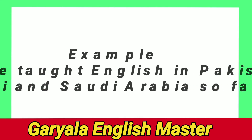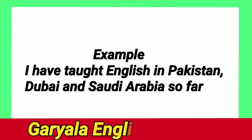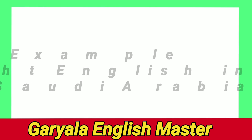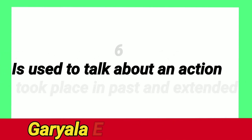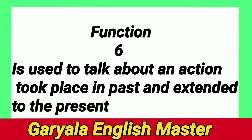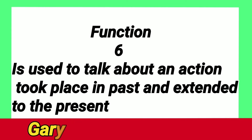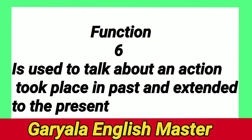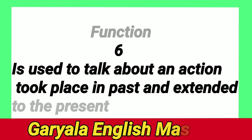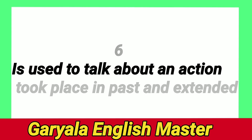Another example for function five: 'I have taught English in Pakistan, Dubai, and Saudi Arabia so far.' Function six: Present Perfect is used to talk about an action that took place in the past and extends to the present. For example: 'I have been ill for 10 days' or 'I have been a teacher of English for 10 years in Saudi Arabia.'